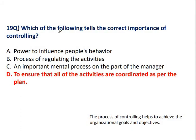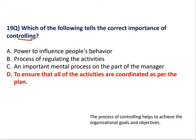Question No. 19: Which of the following tells the correct importance of controlling? Controlling का मतलब क्या होता है — जो आपका management function है: planning, organizing, controlling, directing — उसमें controlling का main purpose है to ensure that all activities are coordinated as per their plan. Controlling helps to achieve the organizational goals and objectives.